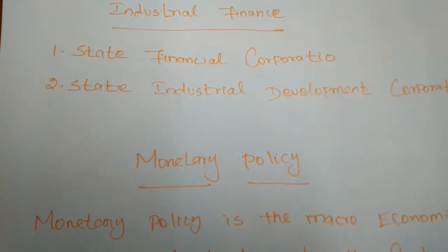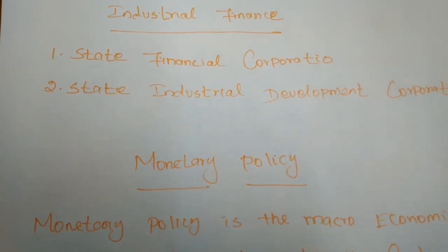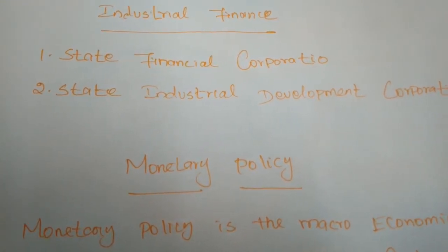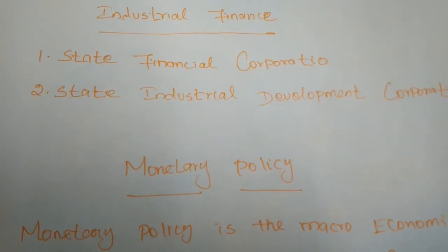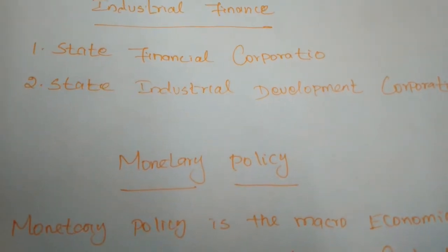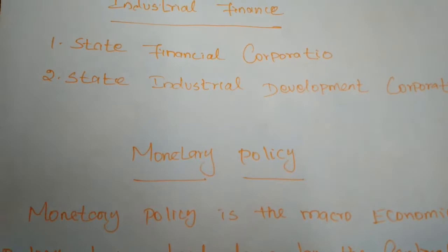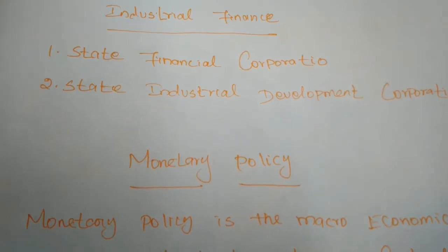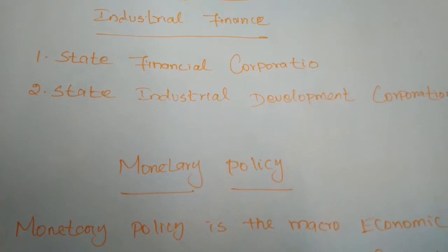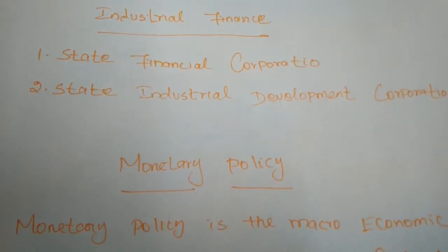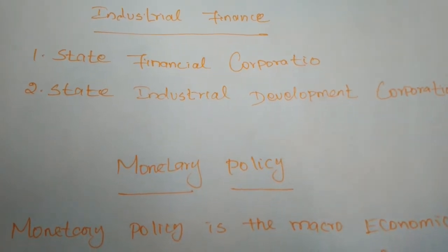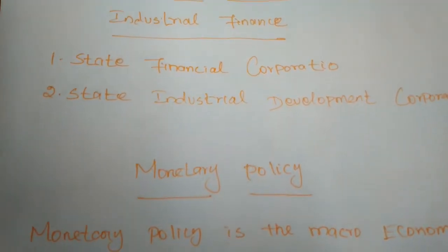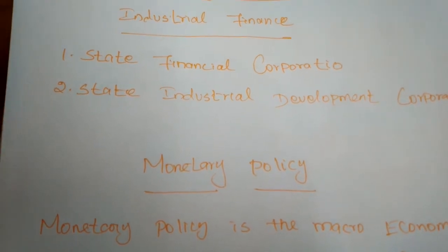In some cases, the SFCs extend to neighboring states. State finance corporations provide loans and underwriting assistance to industrial units having paid-up capital and reserves not exceeding 1 crore. Those small and medium scale industries in need of paid-up capital not exceeding 1 crore receive loans and underwriting assistance. If any industrial unit needs underwriting assistance on the basis of banking guarantees, the state financial corporations will provide loans and underwriting assistance.